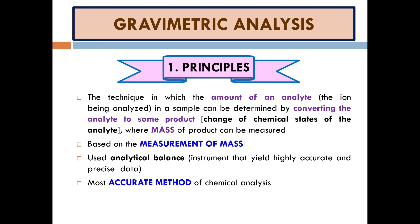The indicator changes color from one state to another, and some people get different readings because it depends on individual perception of when the color change happened. Compared to gravimetry analysis, the analysis is done when you collect the precipitate, filter it, and measure the mass of the precipitate, which gives a very accurate result.